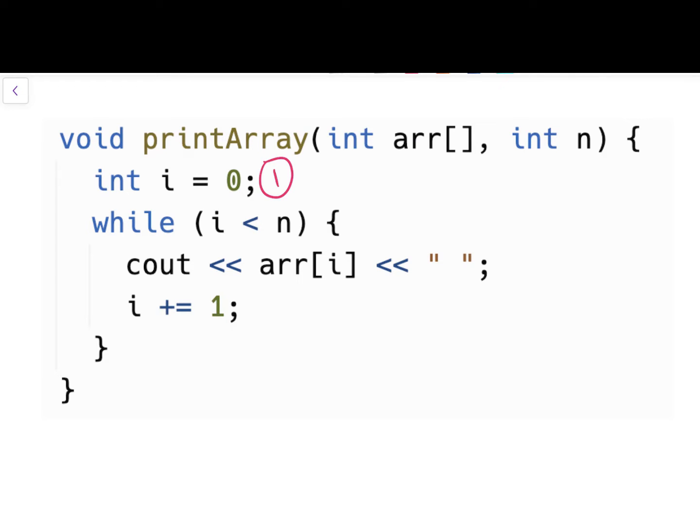Then we have a while loop with a Boolean condition i less than n. How many times is i less than n executed? It'll execute to be true n times, and then it'll execute to be false one time. That's when i is no longer less than n and we break out of the while loop. So next to i less than n, I'm going to write n plus one.